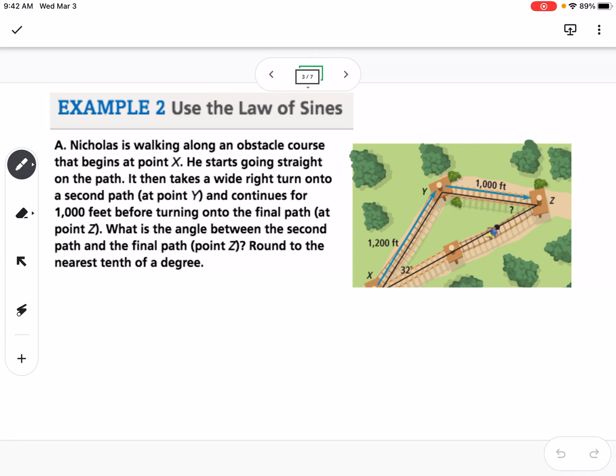So this first example we're going to look at is technically one that could be an ambiguous case, which we'll talk about in example three. So we learned back in geometry that with our triangle congruencies that side-side angle, if it spells a bad word or could spell a bad word, then it could be potentially an ambiguous case. But this is set up as a real-life scenario, so we can go ahead and solve it like we would normally. So it says, Nicholas is walking along an obstacle course that begins at point X. He starts going straight on the path. It takes a wide right turn onto a second path at point Y and continues for 1,000 feet before turning onto the final path at point Z. What is the angle between the second path and the final path, point Z, round to the nearest tenth of a degree?